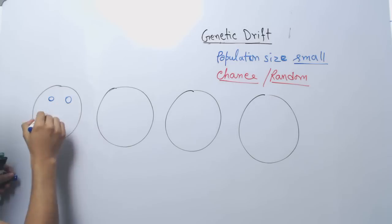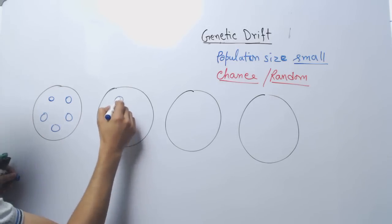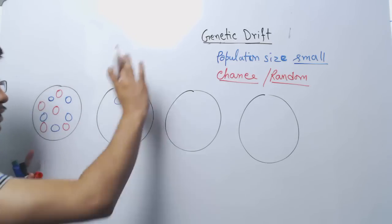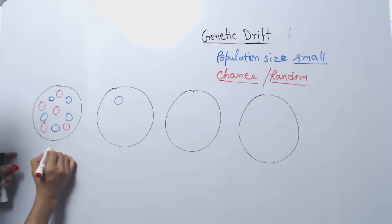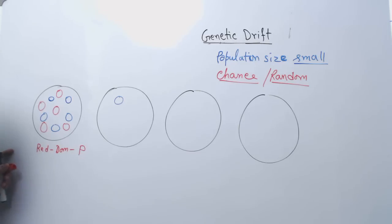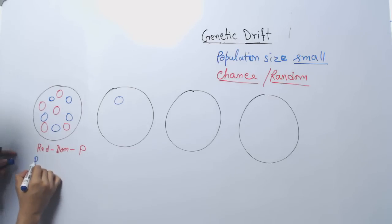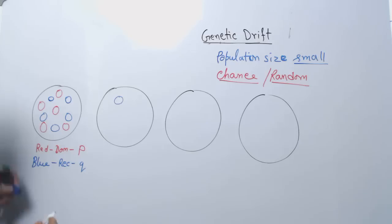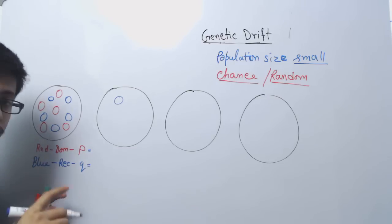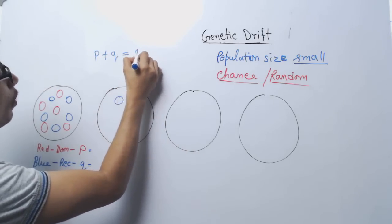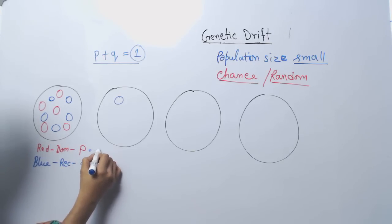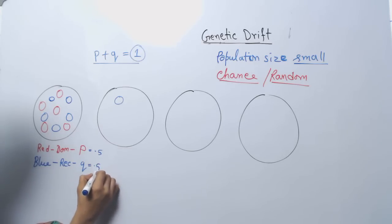This is the population at the very beginning, the start point. At this start point, the red color represents the dominant allele frequency, which we designate with P, and this blue one is the recessive, designated with Q. The frequencies here are the same — the red one is 5 and Q is also 5 throughout the population. So P will be 0.5 and Q will also be 0.5.